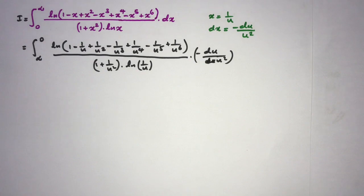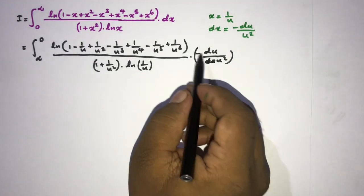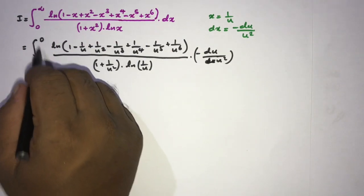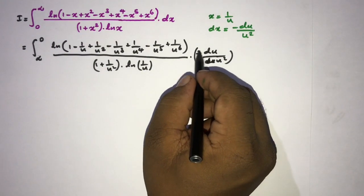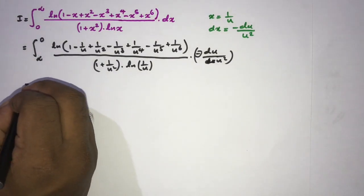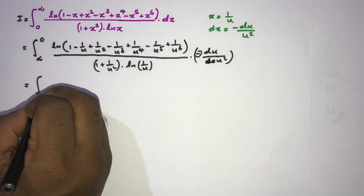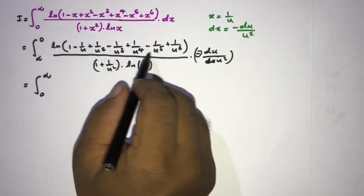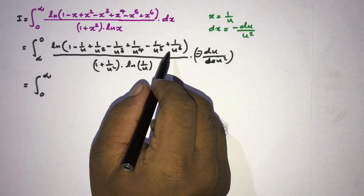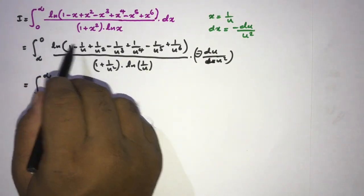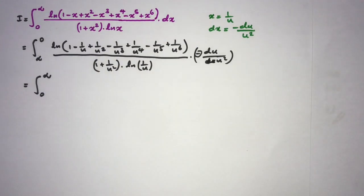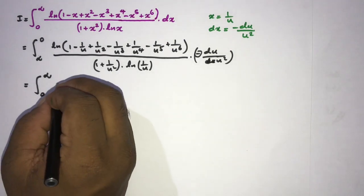We take the minus sign as a factor and change the limits, so the minus cancels when we flip the bounds. We rewrite with limit 0 to infinity, taking the common denominator as u to the sixth power. Since we have a natural log of a/b type expression, we can use the properties of natural log.